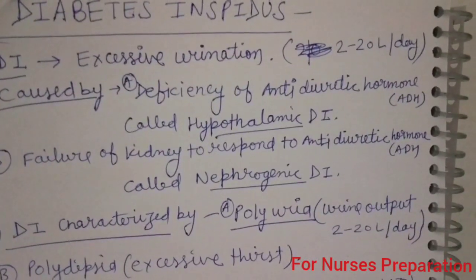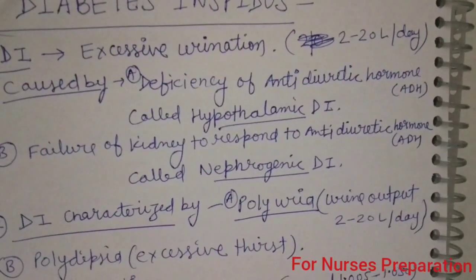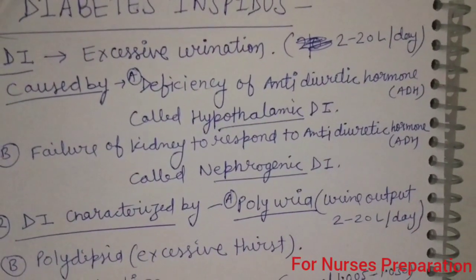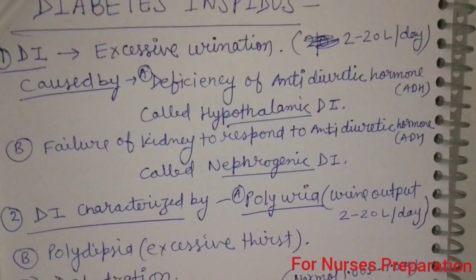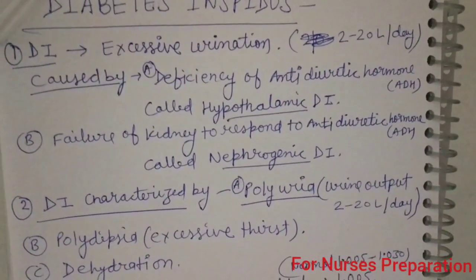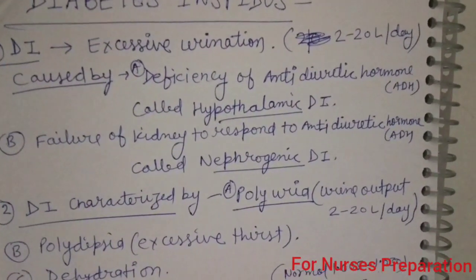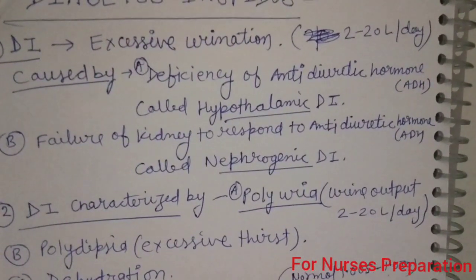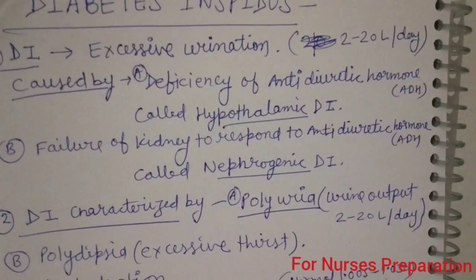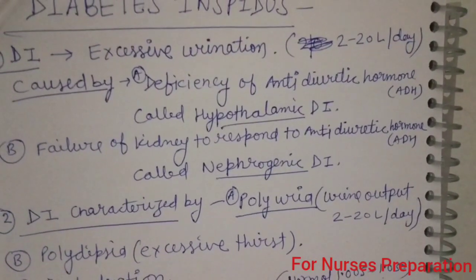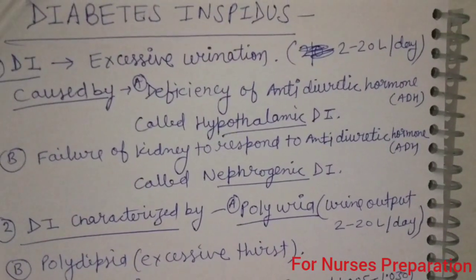If this disease occurs due to the deficiency of anti-diuretic hormone, this is known as hypothalamic diabetes insipidus. If this disease condition occurs due to the failure of the kidney to respond to the anti-diuretic hormone, ADH, it is known as nephrogenic diabetes insipidus.